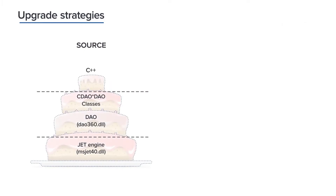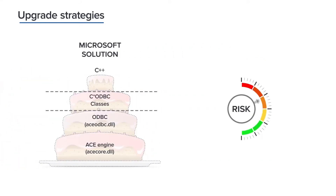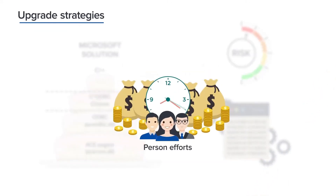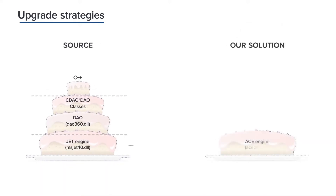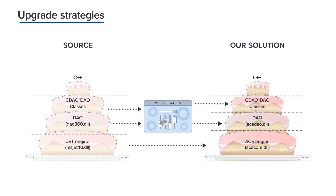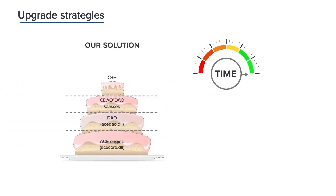Let's review the upgrade strategies we considered. Microsoft officially recommends replacing the code related to the GET engine with code capable of providing data access to the modern ACE engine. This method presents high risks due to the significant amount of code that needs to be altered and therefore a high possibility of introducing a defect, leading to dramatically high upgrade costs. As an alternative, we propose to remediate the existing code so that the ACE engine is loaded instead of the GET engine. This is achieved by modifying the initialization event of all code modules responsible for loading the ACE engine. This approach is cost-effective due to low time effort, and therefore potential risks are minimized.